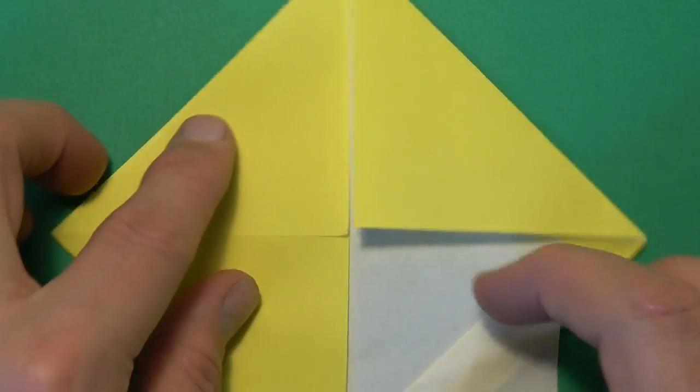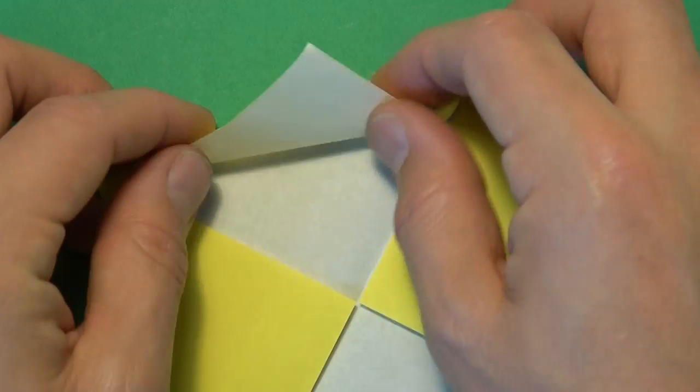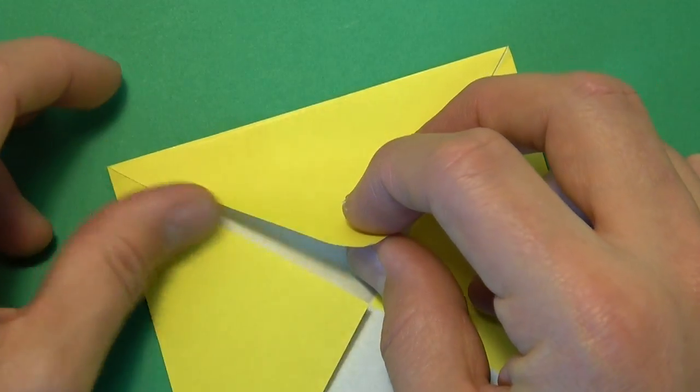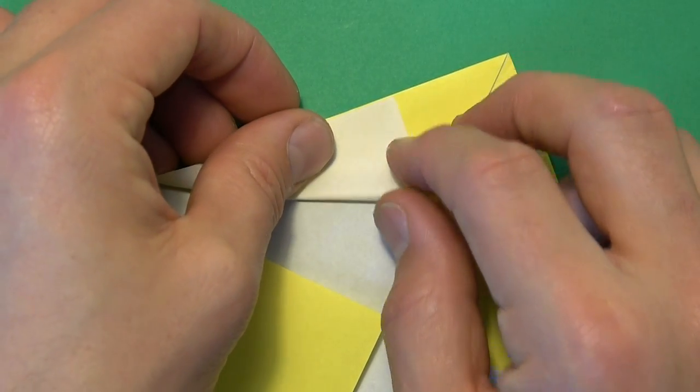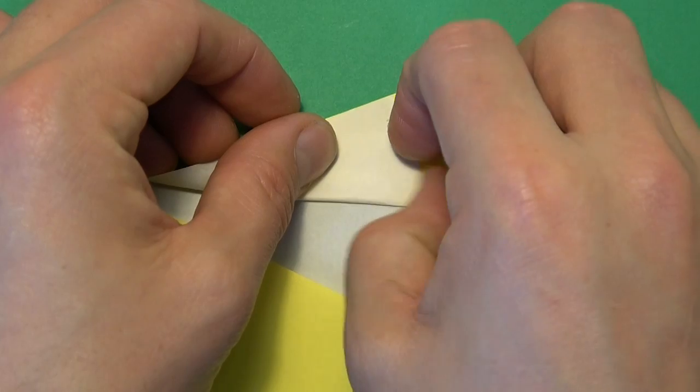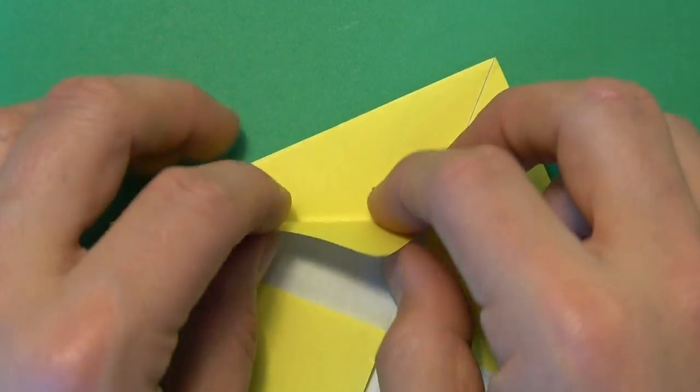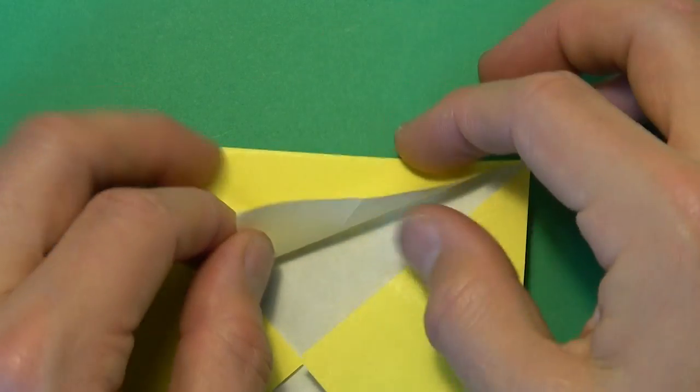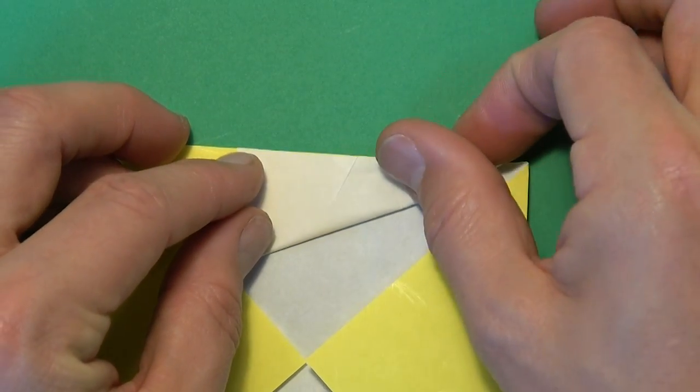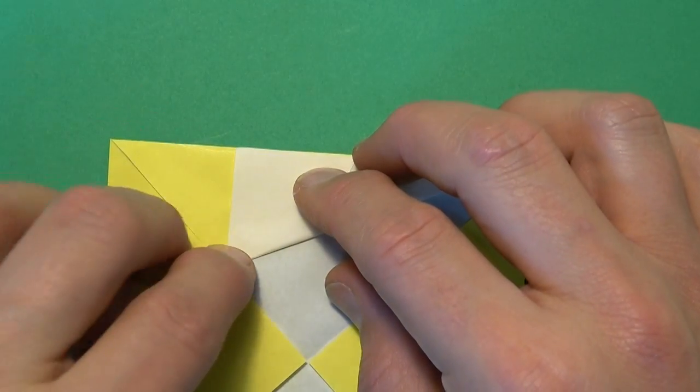And let's rotate. And let's repeat with this flap. So fold this edge to here. And just flatten right here. And unfold. And fold the flap up so that this edge aligns with this edge. And flatten right here.